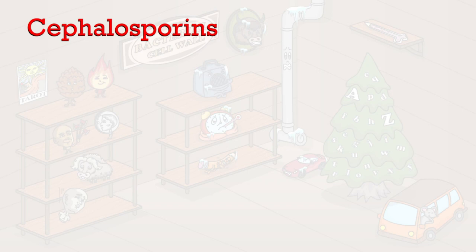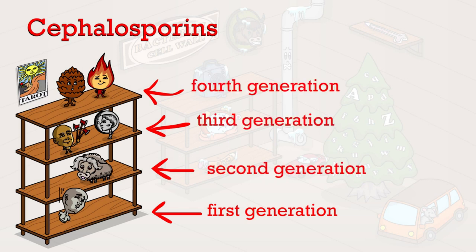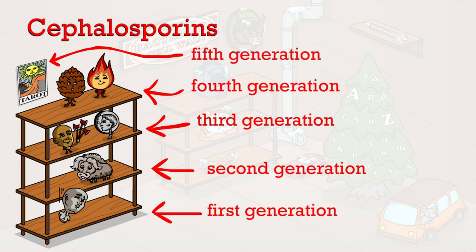The cephalosporins are represented on a shelving unit with four shelves, each representing one of the first four generations of cephalosporins. The poster just above it on the wall represents one of the fifth generation cephalosporins. You can remember that these characters are all cephalosporins because they all have large heads — 'cephalic' means of or relating to the head — reminding you that each of these medications starts with the 'ceph-' sound.